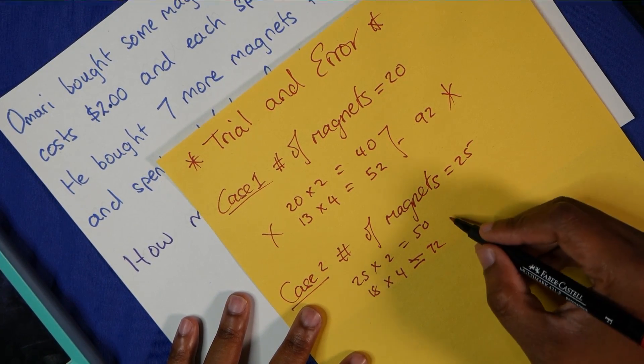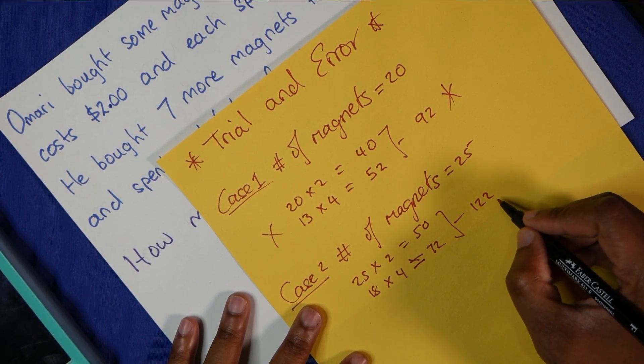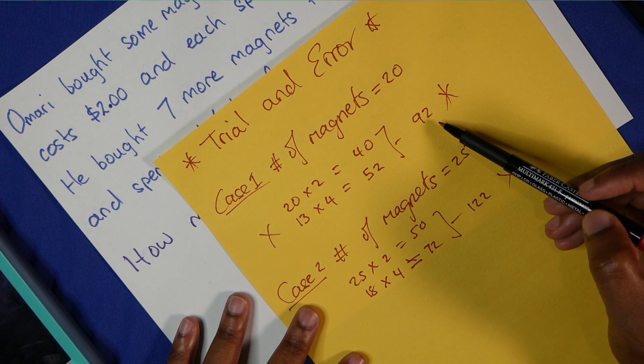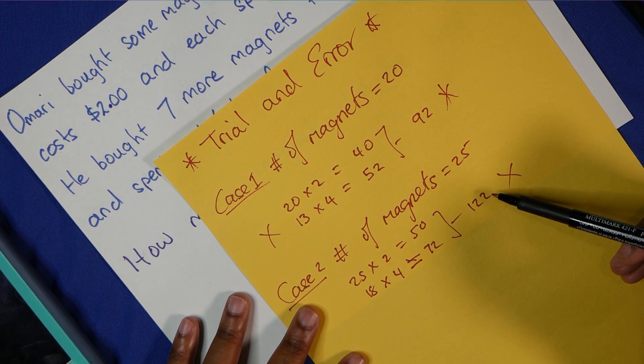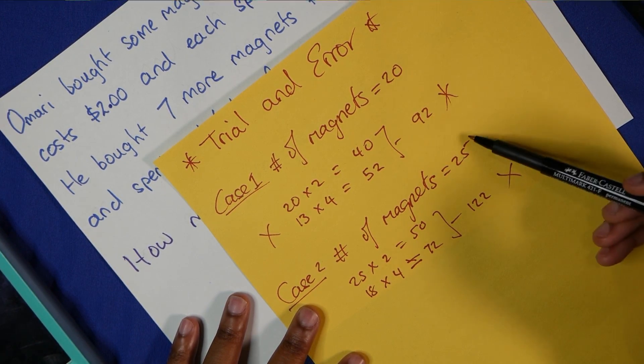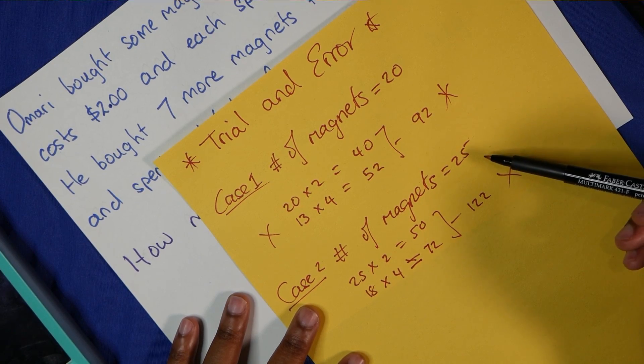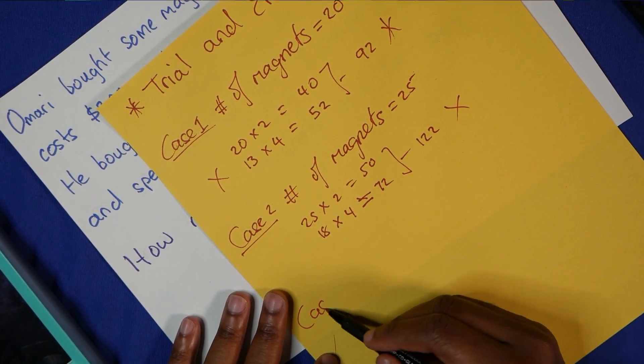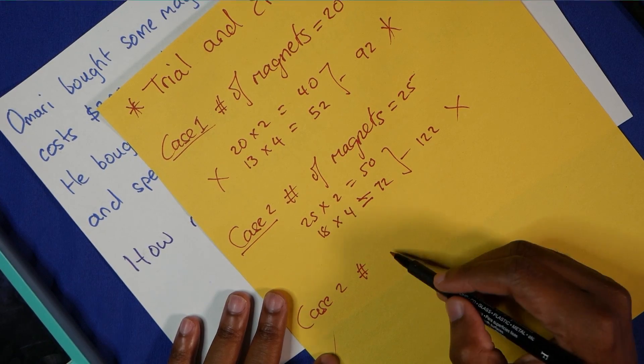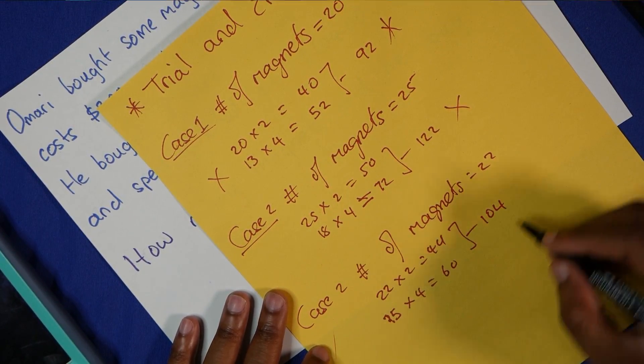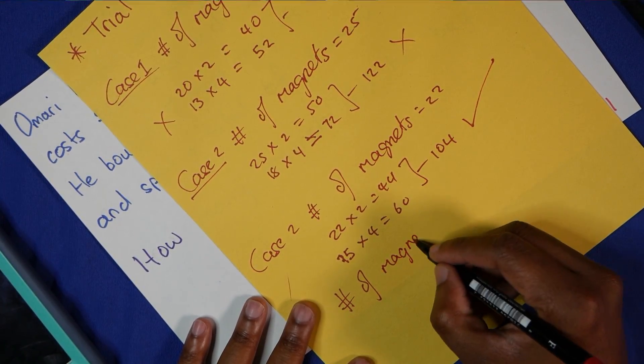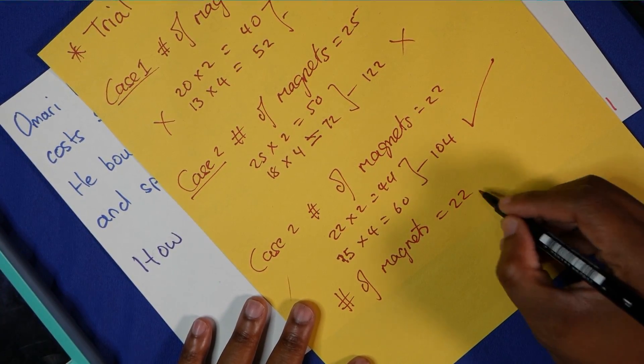This is too much. Our first answer was closer to 104 than our second answer. So we know the number of magnets is between 20 and 25, so the next attempt would be to go maybe 22, which we know already is the answer. And when we work it out, we will prove this as well. So the number of magnets is equal to 22.